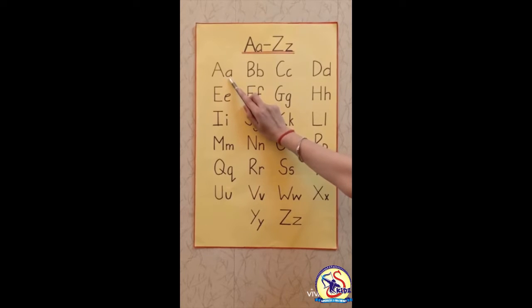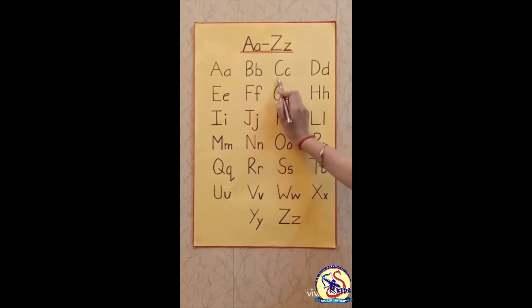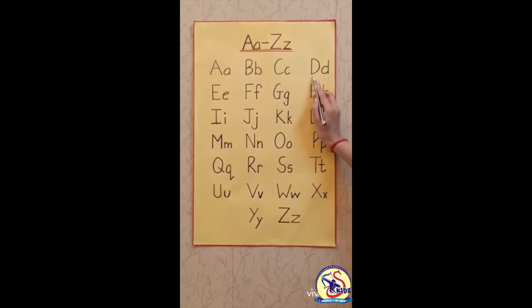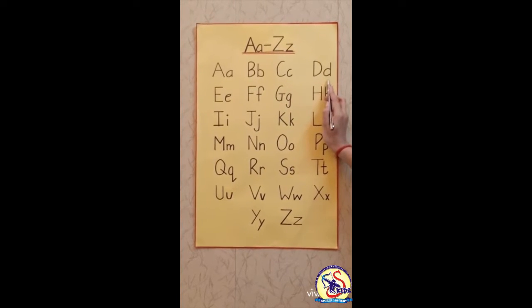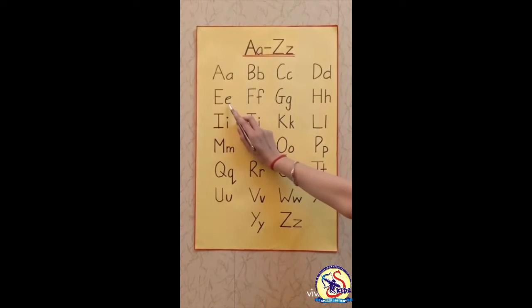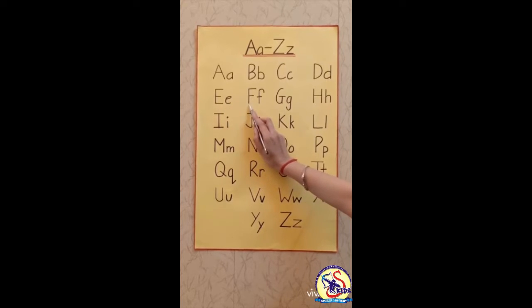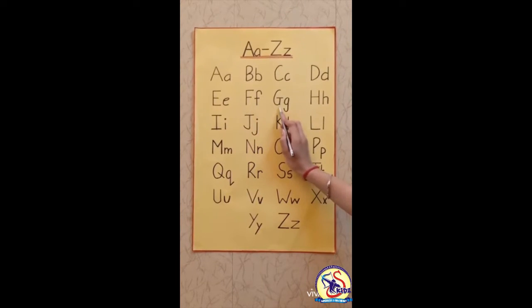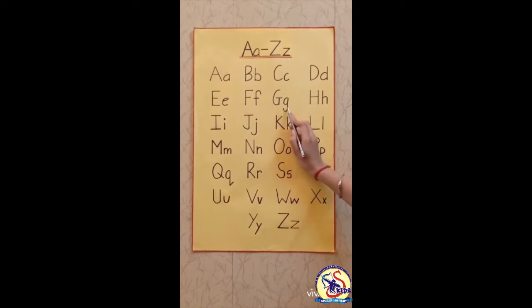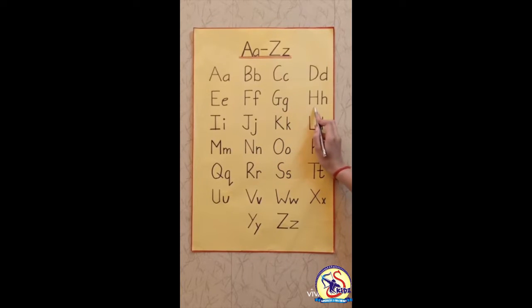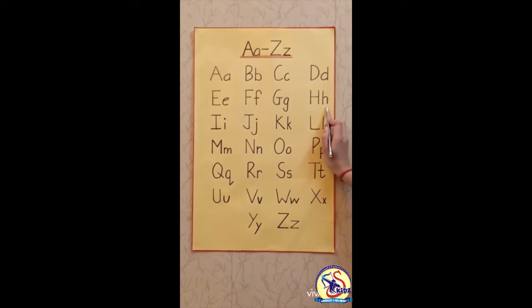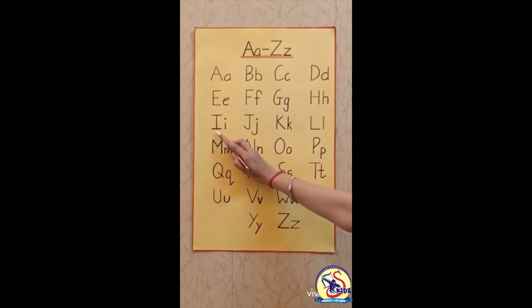Capital A, small a. Capital B, small b. Capital C, small c. Capital D, small d. Capital E, small e. Capital F, small f. Capital G, small g. Capital H, small h. Capital I, small i.